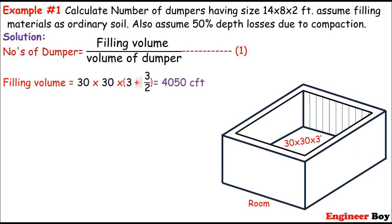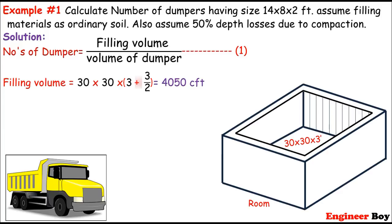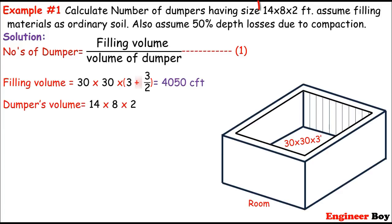And now we have to calculate the volume of dumper, which must be at size 14 times 8 times 2 feet. And there is no losses due to compaction because the dumper is a dumper. We don't need to compact the material inside the dumper. So 14 times 8 times 2 feet. This must be 224 CFT.